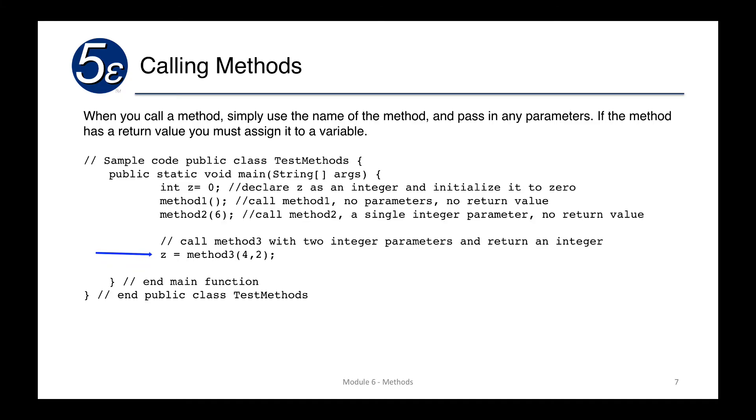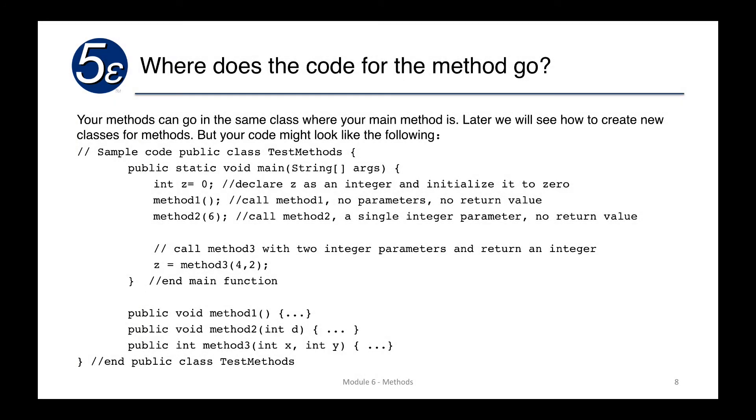In this case where we have method three with two integer parameters and a return integer, method three would have been declared as public int method three, and then integer x, integer y. Again, any variables would have worked, but inside the code it is going to have a return value that will return something that it does, probably with these two numbers. You'll notice that the return of this will be used as part of an assignment into a variable here that you see, int z.